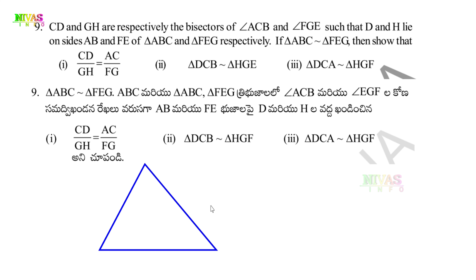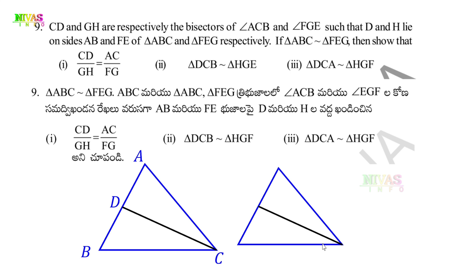I will draw triangle ABC. Here, CD is the bisector of angle C — if you look at angle C, it is divided into two equal parts, and D lies on AB. Similarly, for triangle FGE, GH is the bisector of angle G, dividing it into two equal parts, and H lies on FE.